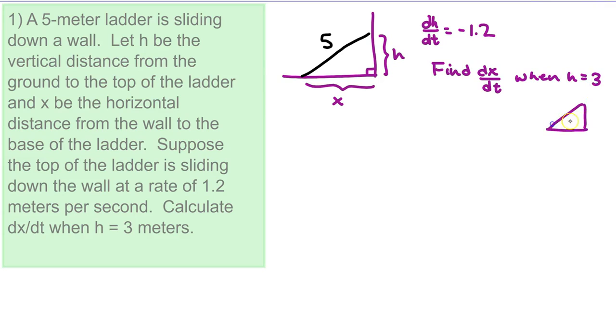By the way, if h is 3, we have a 3 here, we have a 5 here, we're going to use the Pythagorean theorem and we get a 4 there for x. So now we write the equation that relates the variables using the Pythagorean theorem. We have x squared plus h squared equals 25.